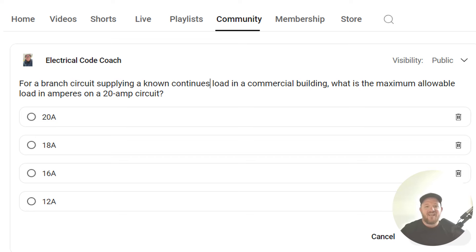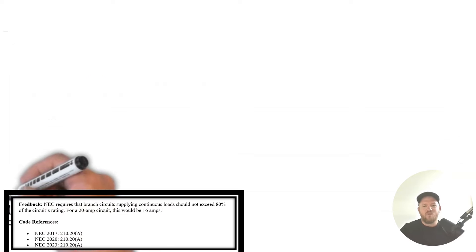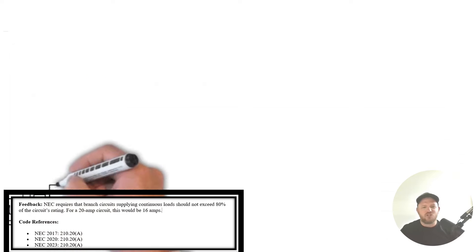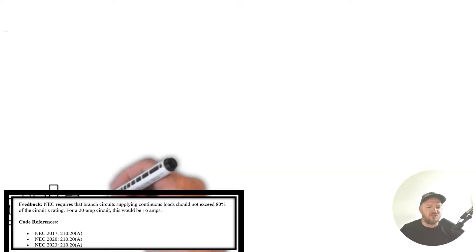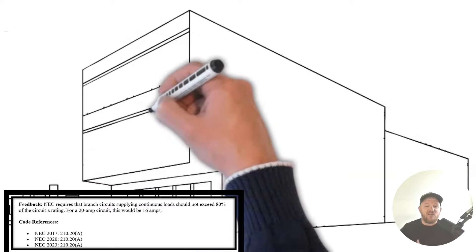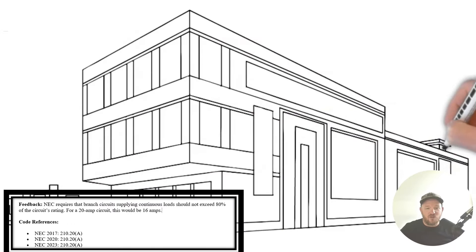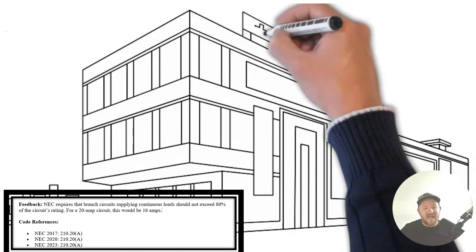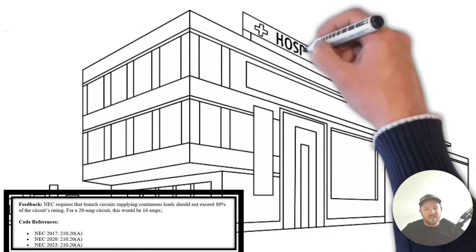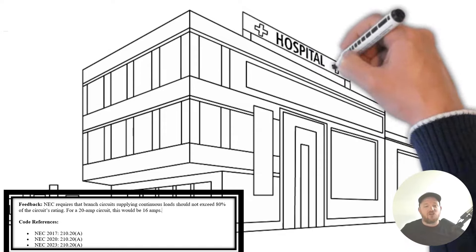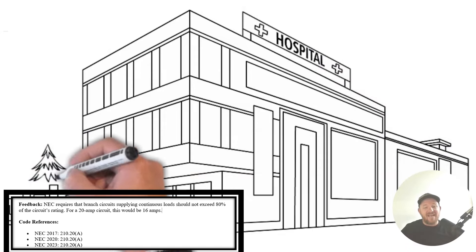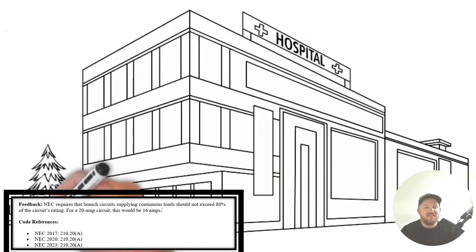The correct answer is 16. Whether it's commercial or residential, if it's a known continuous load, we're going to have to only fill that circuit up to 80% of its capacity.